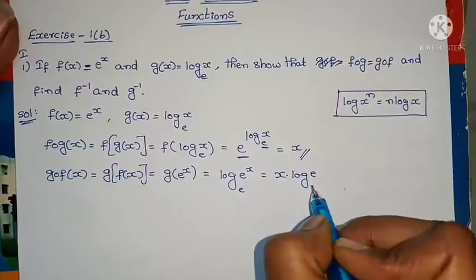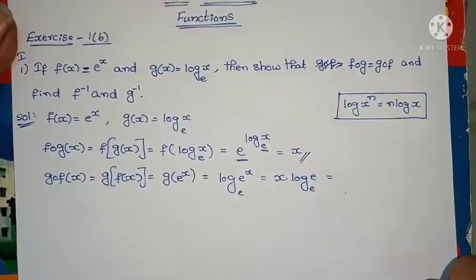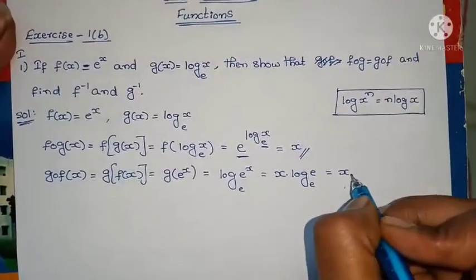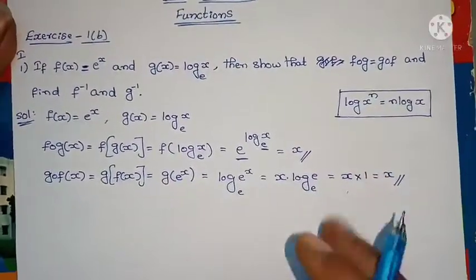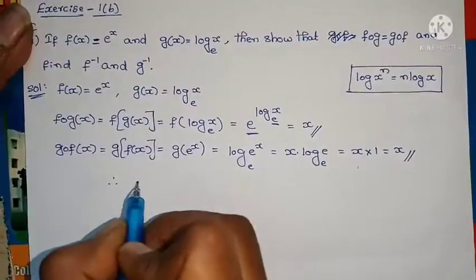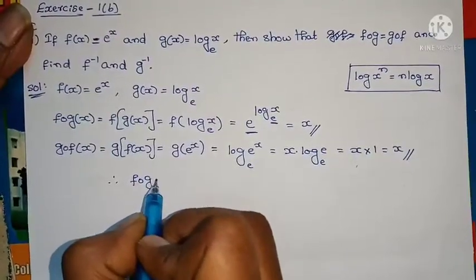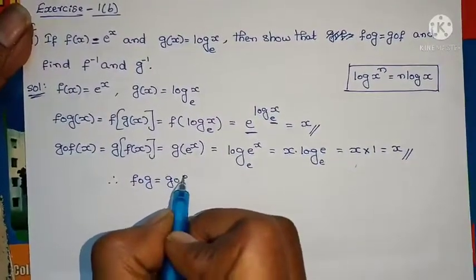Next, find g∘f(x). This means g of f(x), which equals g(e^x). Take the g(x) model - wherever x appears, substitute e^x. That gives log_e(e^x). Log base e of e^x equals x times 1, which equals x. Therefore f∘g equals g∘f.